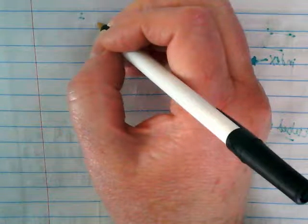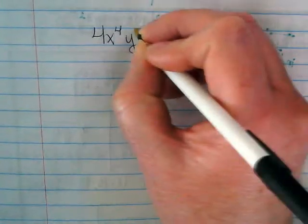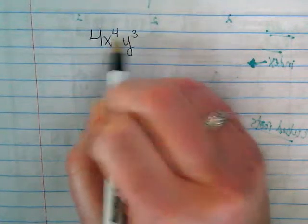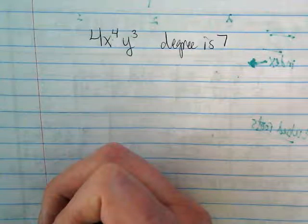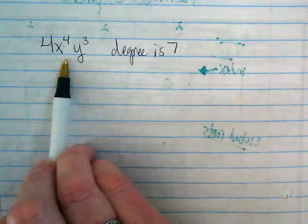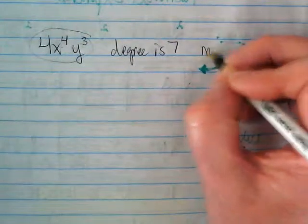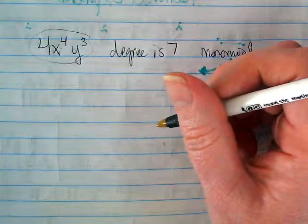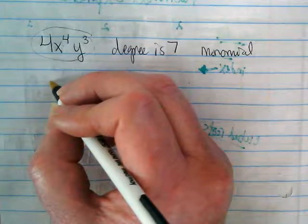If I have 4x to the fourth, y to the third, to find the degree we would add these two together. Its degree is seven. But let's also name it. What kind of term is this? It's a monomial, because there's no plus or minus. It's just one term. So it's a monomial. Actually, you know what? Tomorrow I think I'm just going to have you guys practice the naming.